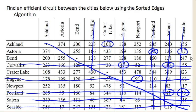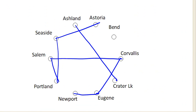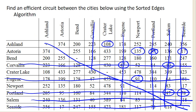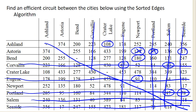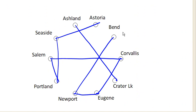The next cheapest is Newport to Astoria. Notice why we would not want to add this — it would create a mini circuit that does not include all the cities. So we're not going to include Newport to Astoria. How about Newport to Bend? That's certainly going to be fine, so we add Newport to Bend. Next on our list is Bend to Ashland at 200, and Bend to Ashland is okay because we end at Crater Lake.